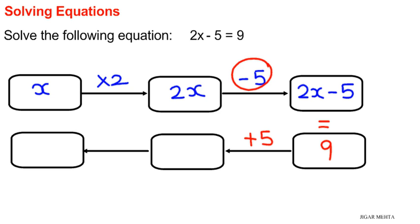So 9 plus 5 will give me 14. So I have 2x equals 14. Next multiplication by 2, the opposite will be divide by 2.